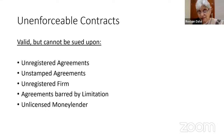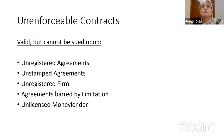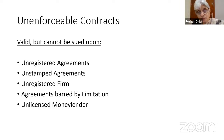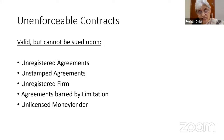An agreement barred by limitation — unless you can show the bar is removed by part payment, or by acknowledgement in writing, you can never sue. Limitation will not simply go away. Contracts for lending money under the Money Lenders Act — every money lender is supposed to be licensed. If there is an unlicensed money lender, he cannot sue on a promissory note or bill of exchange for money lent. These are five important things which come up for consideration in courts.